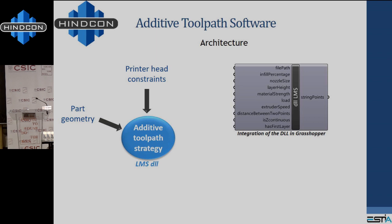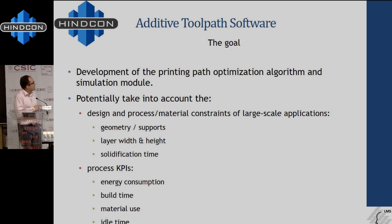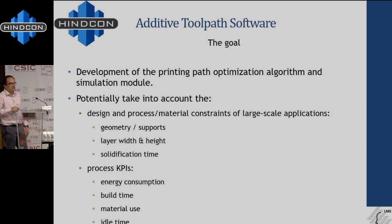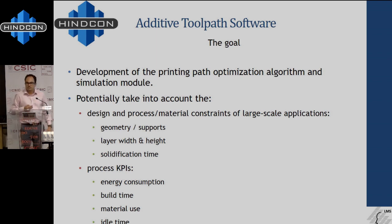So we're going to see the methodology behind this algorithm. The ultimate goal is to optimize the path and be able to simulate. We have to take into account the geometry itself, any constraints there may be, machine restrictions, and material restrictions. Then we calculate performance indicators such as building time and energy consumption.